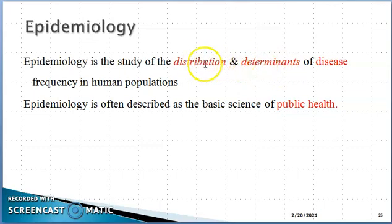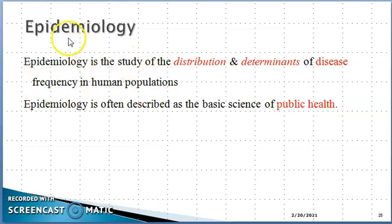We examine: number one, distribution — which place, which geographic area; number two, determinants — which factors, which disease source and cause and reason; and number three, disease frequency — the number, counting, ratio, and proportion. These three things are studied under the heading of epidemiology, which is a public health basic science.